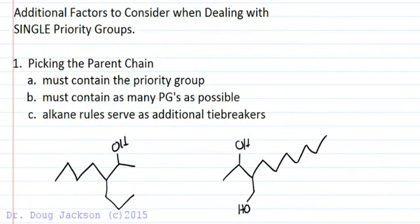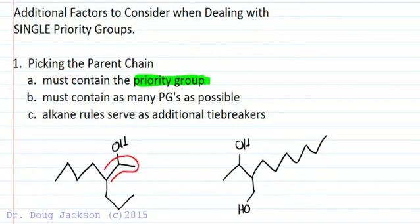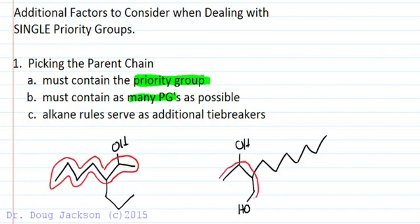Picking the parent chain is where the first difference comes up. We don't pick just the longest carbon chain — we also have to contain the priority group. So if we can make a longer carbon chain, that doesn't necessarily matter; we've got to pick the longest chain that also contains the group. Likewise, we must contain as many priority groups as we possibly can, even if that means picking a shorter chain to include both priority groups.